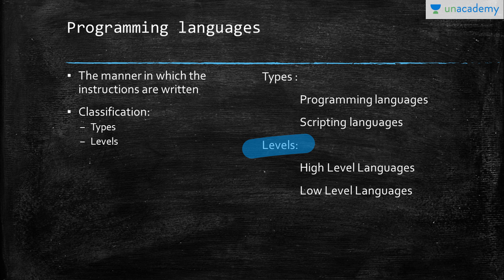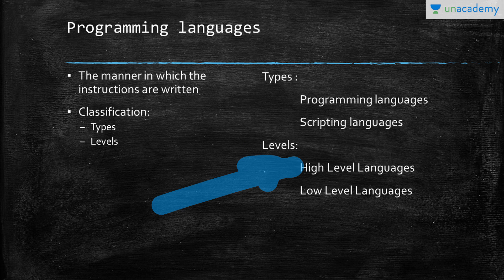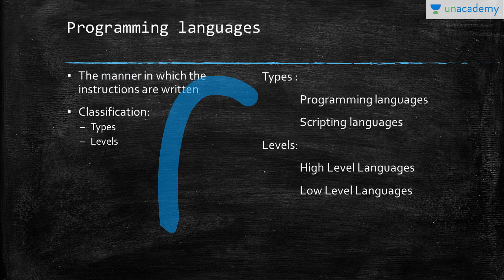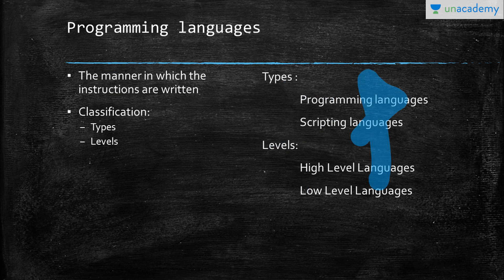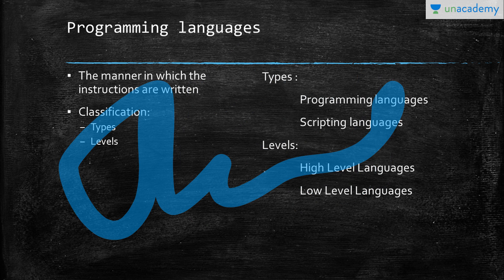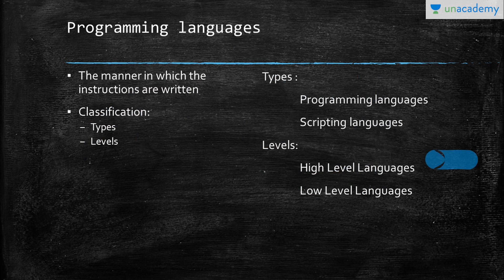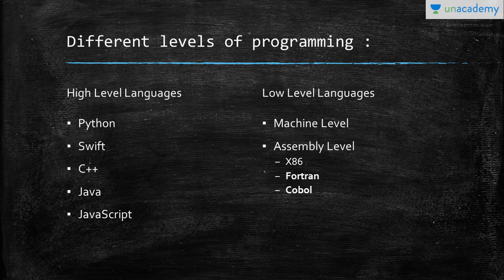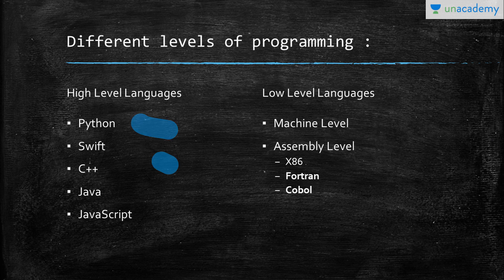Let's talk about high-level languages. These are the languages that we actually come across in day-to-day life, like the ones we hear the most—for example, C, C++, R, Java, Python, and many others. All of these are high-level languages: Python, Swift, Java, C++, JavaScript—all of them.